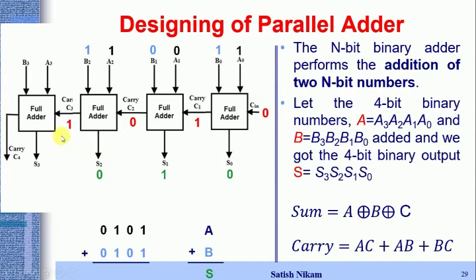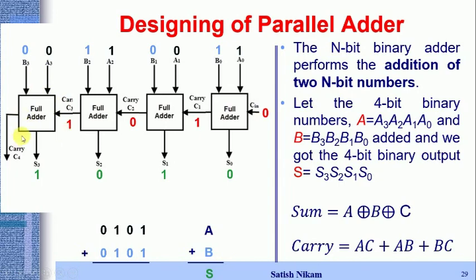For the MSB full adder, a3 = 0, b3 = 0, and carry-in c3 = 1. Sum = 0 XOR 0 XOR 1, so s3 = 1. For carry: AC = 0, AB = 0, BC = 0, so carry-out = 0.